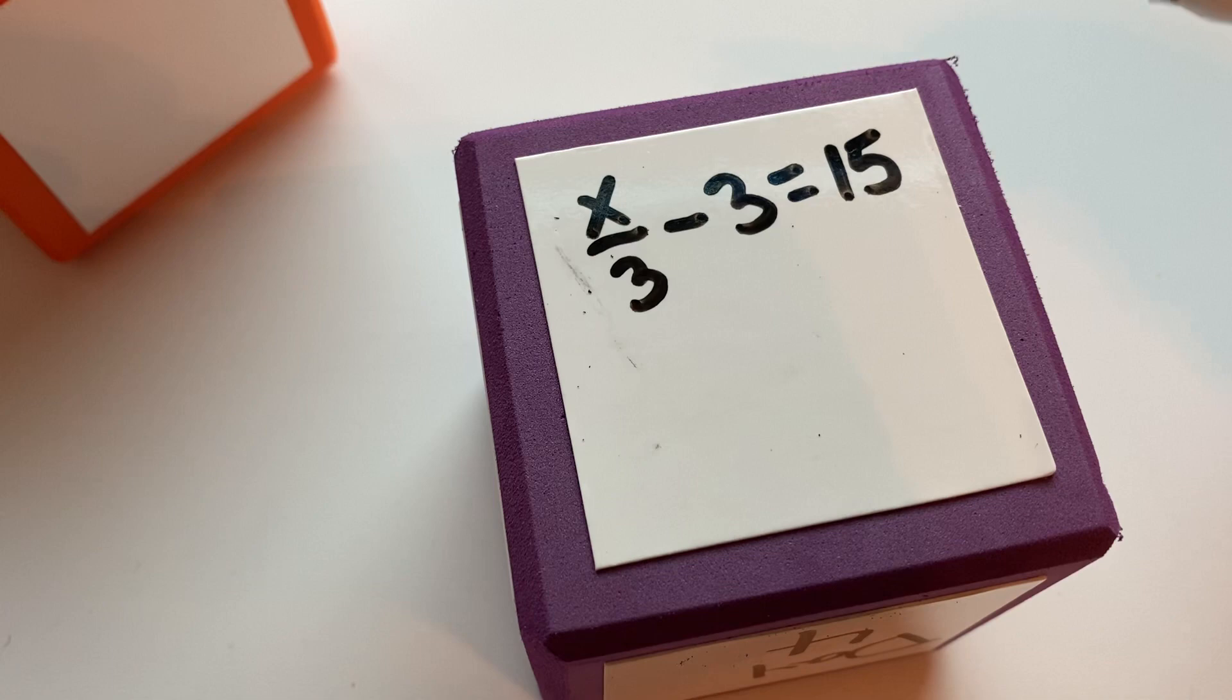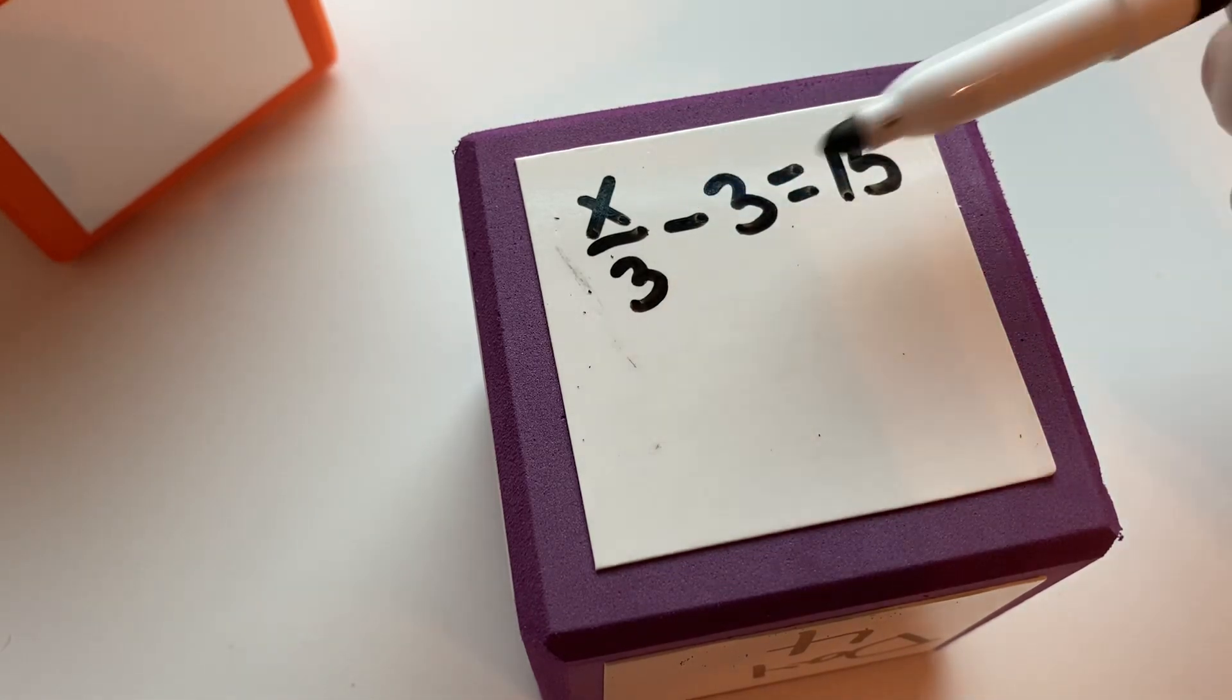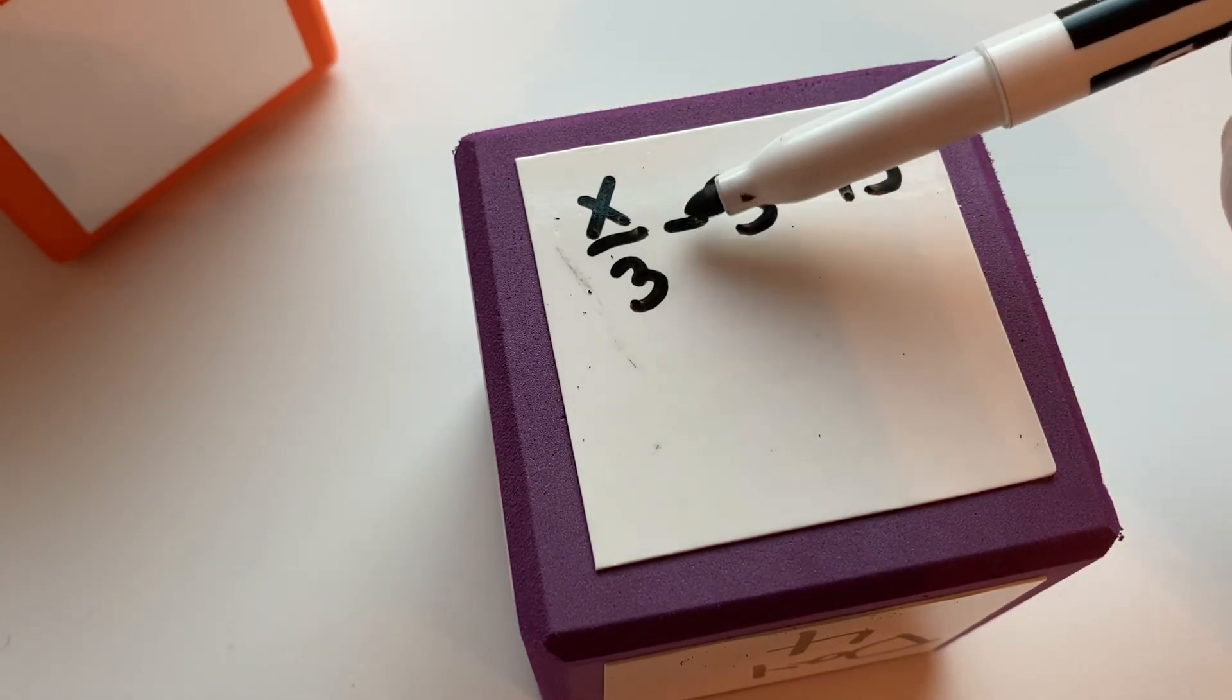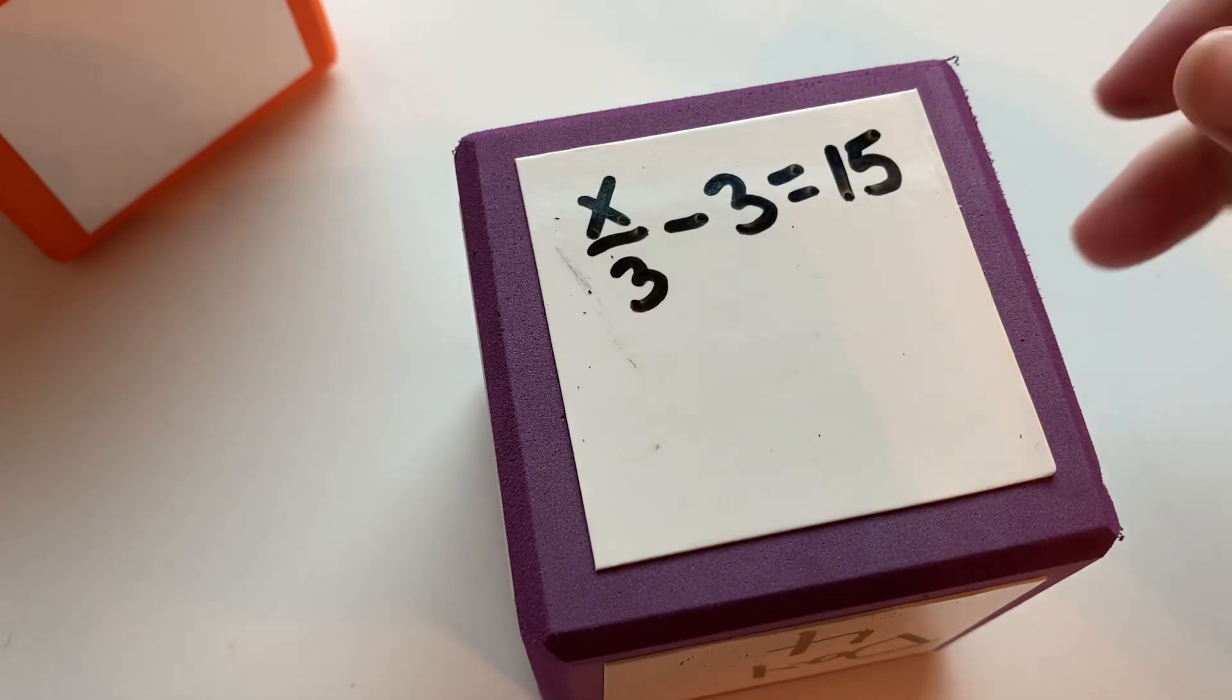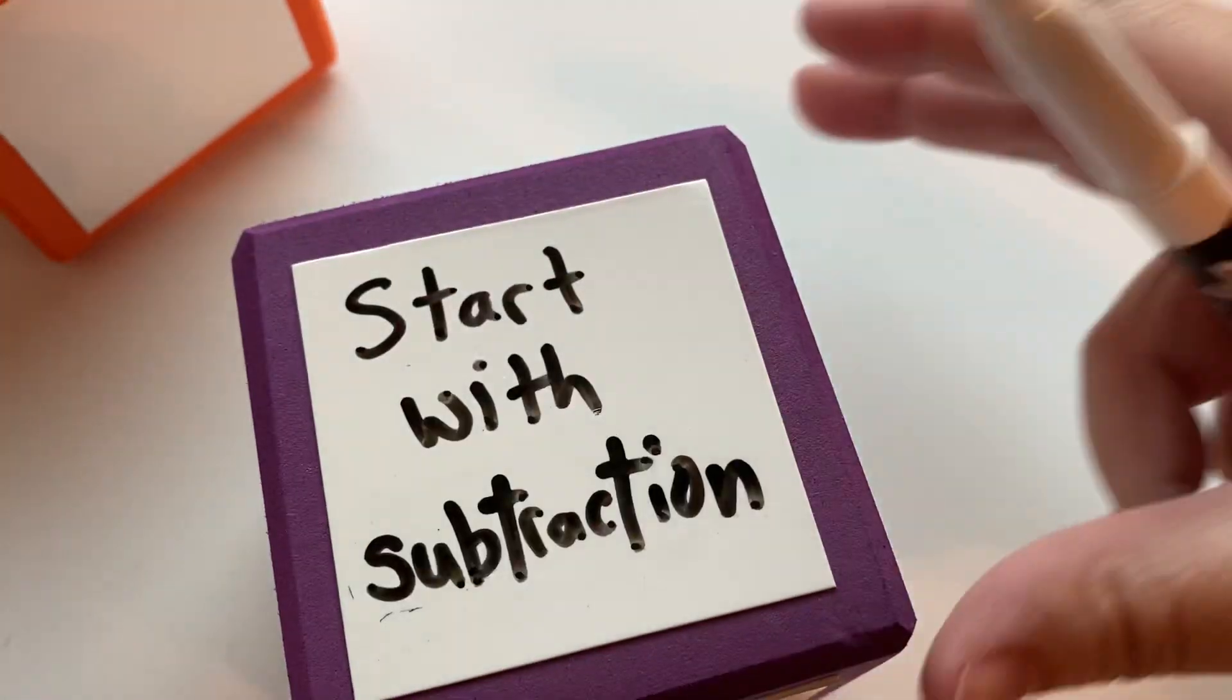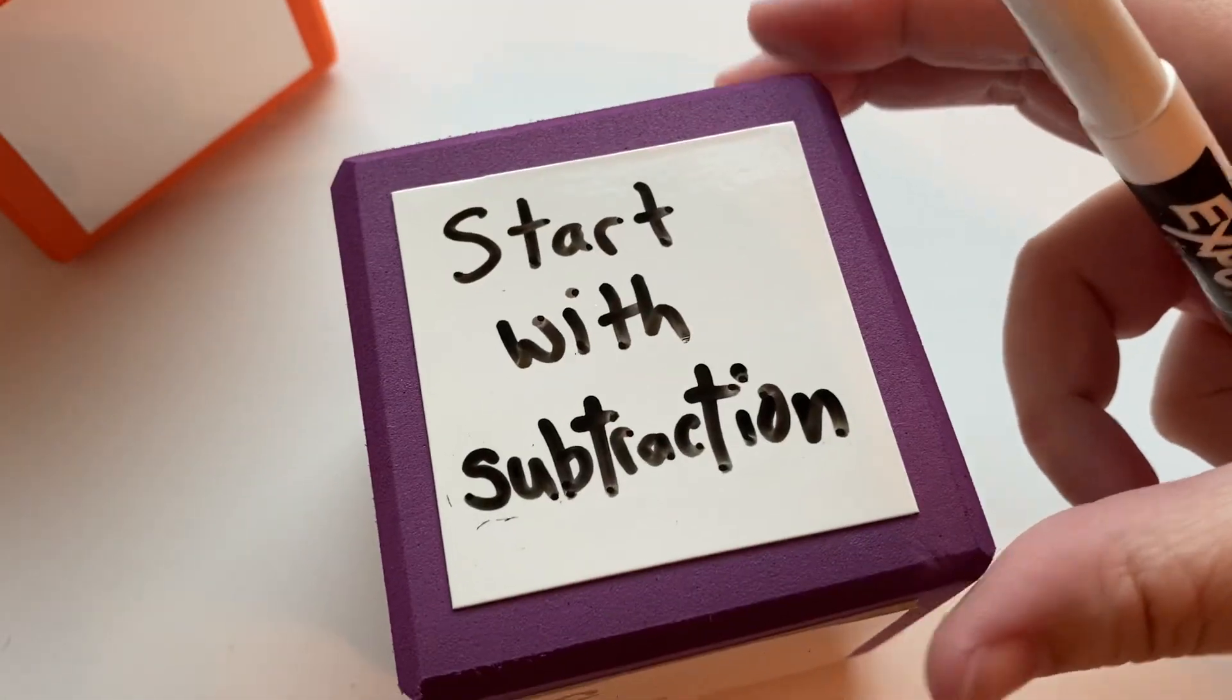As we've talked before, you have two operations, so you're going to do two inverse operations, and you're going to want to start with subtraction, and then do the division. You could do it the other way, but it's a lot more complicated. Don't make things too complicated.